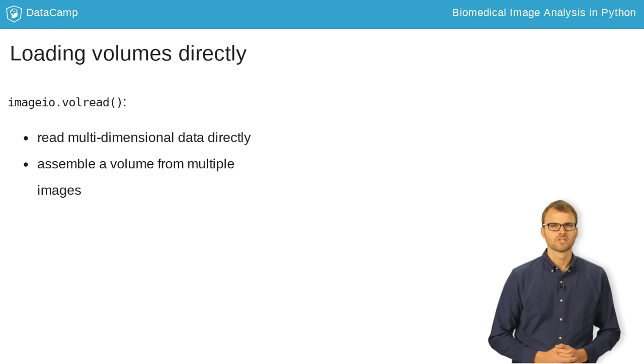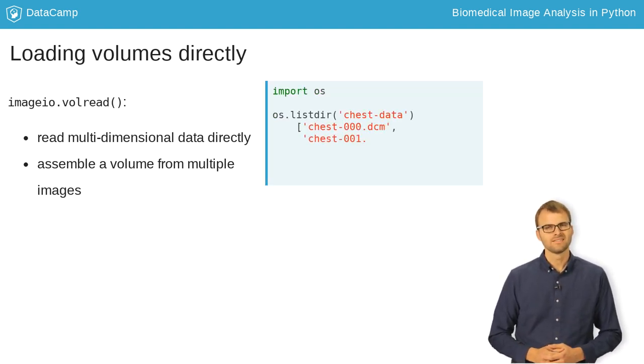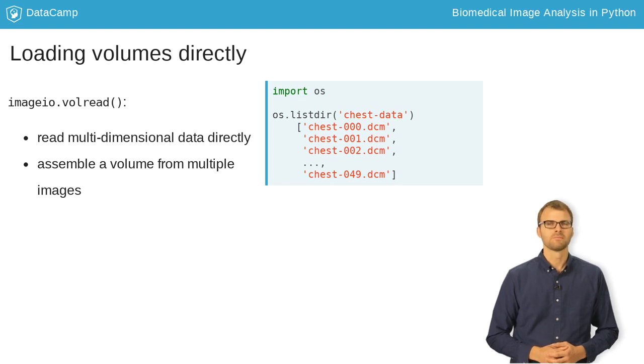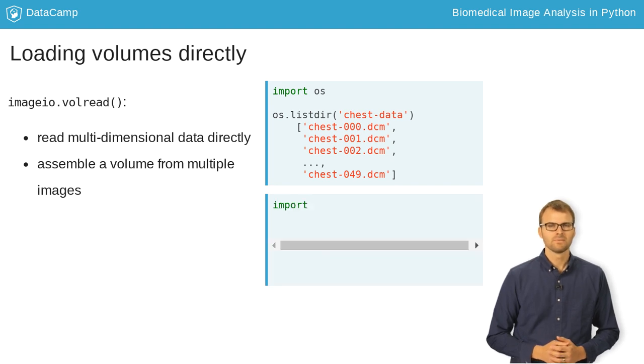ImageIO's volread function is capable of reading volumes directly from disk, whether your images are stored in their own folder or if the dataset is already multidimensional. In this example, we have a folder named chest-data, which contains 50 slices of a 3D volume. We simply have to pass the folder name to volread and it will assemble the volume for us.